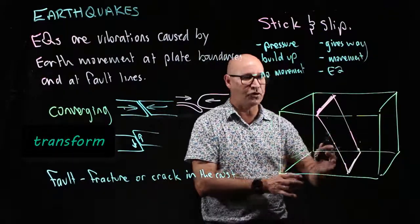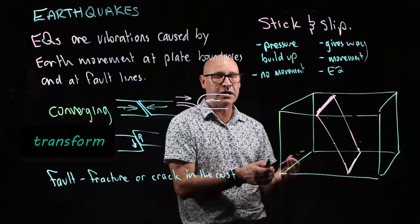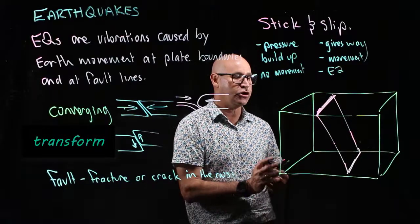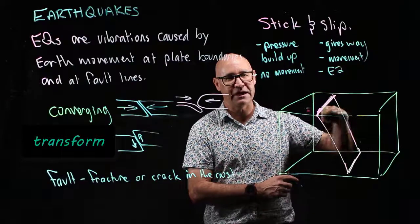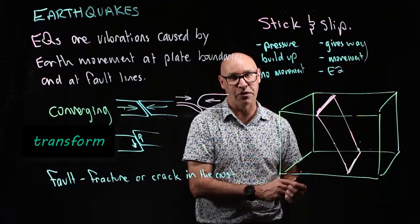So here's our two plates or our fault line. This is where the earthquake is going to occur. So the earthquake doesn't occur on the surface. It occurs somewhere down in the earth's crust.